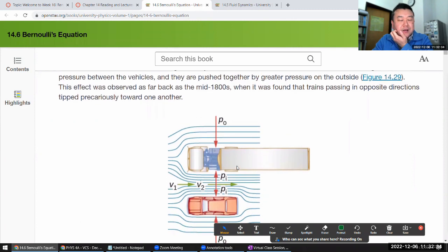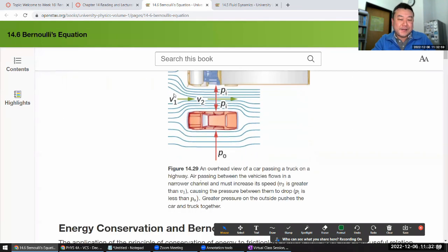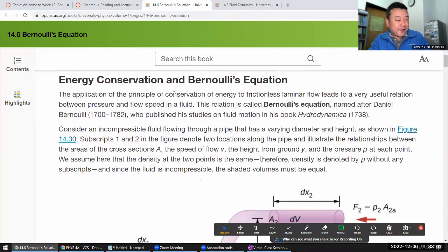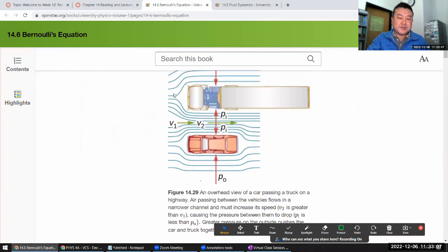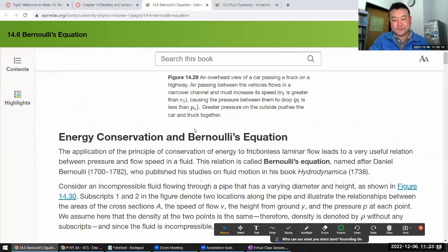So I'm going to keep going. There are many common examples of pressure dropping in rapidly moving fluid. For instance, shower curtain. I could have speed read through this. These are a bunch of examples. Let me read through it. Have a disagreeable habit of bulging into the shower stone whenever the shower is done. The reason is that the high-velocity stream of water and air creates a region of lower pressure inside the shower, whereas the pressure on the other side remains at the standard atmospheric pressure. This pressure difference results in a net force pushing the curtain inward. Similarly, when a car passes a truck on the highway, the two vehicles seem to pull towards each other. The reason is the same, the high-velocity of the air between the car and the truck creates a region of lower pressure between the vehicles, and they are pushed together by greater pressure on the outside.